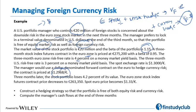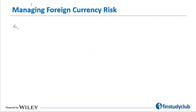Three months later: the stock portfolio loses 4.2 percent, the eurozone index futures contract price decreases as the overall market has gone down, and the spot euro price becomes 1.33 dollar per euro — the euro has appreciated. We need to construct a hedging strategy free of both equity and currency risk. The stock portfolio is worth 20 million euro, or 26 million dollars at 1.3 dollar per euro. The portfolio beta is 1.15, which we want to neutralize.